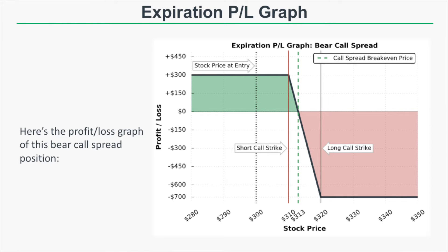The stock price at entry is at 300, leaving us with a full profit of $300 if the stock price remains unchanged or even rises as much as $10. At any price below 310, both the 310 and 320 calls will expire worthless. Since we collected a net $3 credit for the spread, we'll keep the $300 of premium.